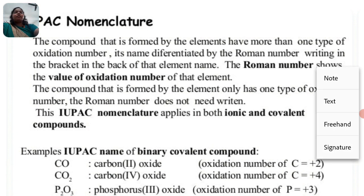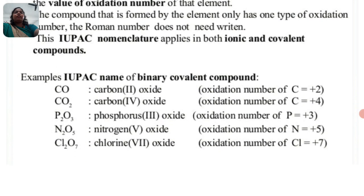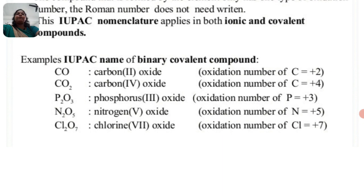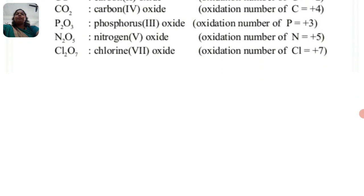Now some examples: Carbon dioxide (CO2) — the oxidation number of carbon is plus 2. CO2 is carbon(IV) oxide where the oxidation number of carbon is plus 4. P2O3 is phosphorous trioxide — oxidation number of phosphorus is plus 3. N2O5 is nitrogen(V) oxide — oxidation number of nitrogen is plus 5. Cl2O7 is chlorine(VII) oxide — oxidation number of chlorine is plus 7.